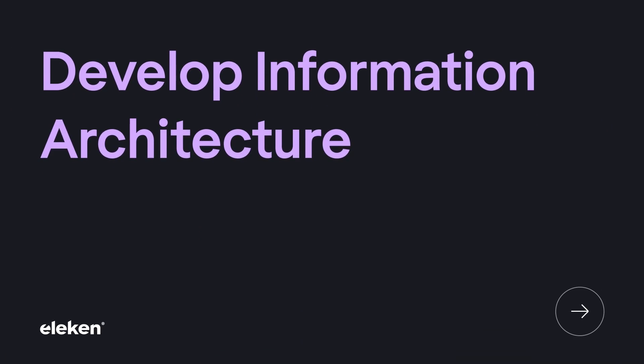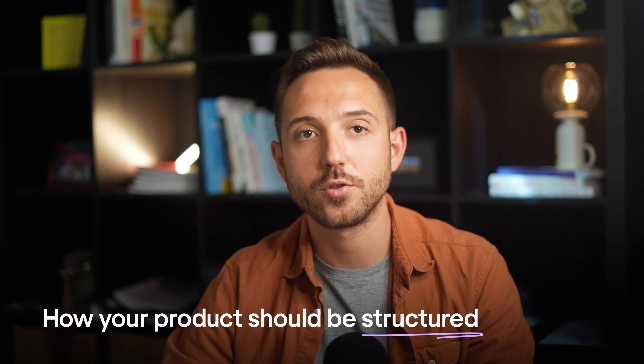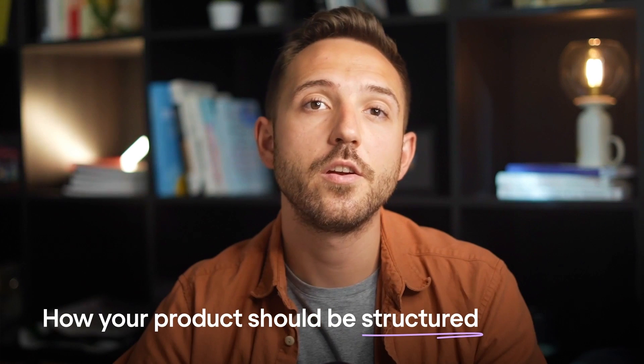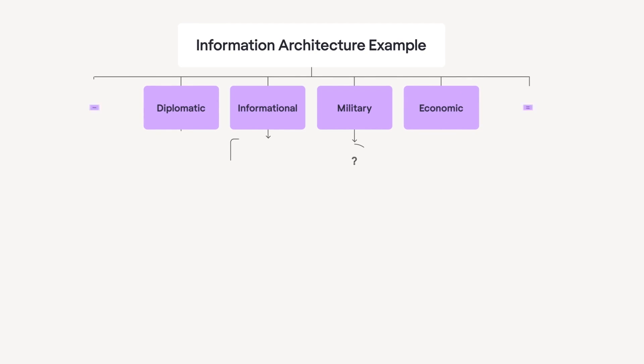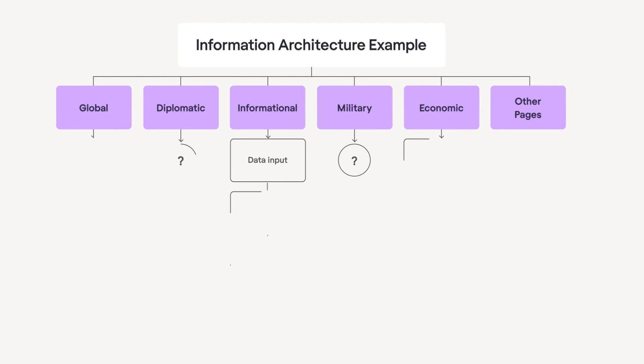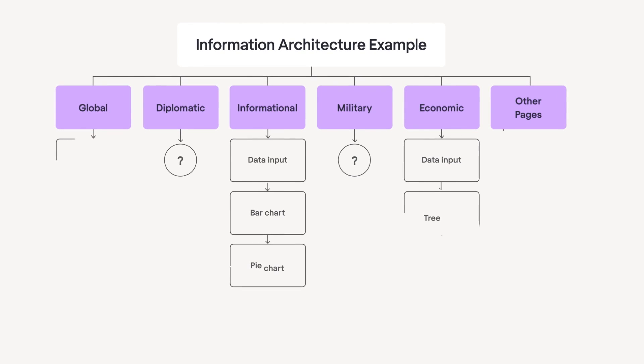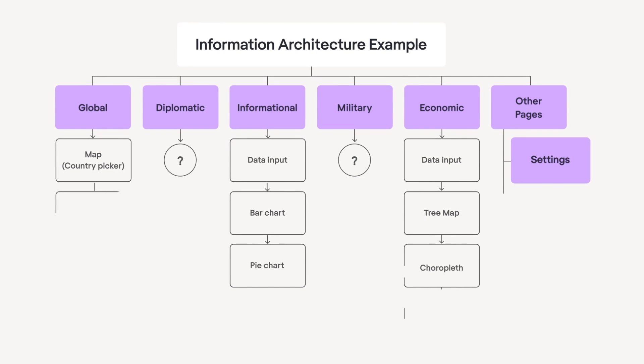And we move to stage number three: develop information architecture. After you've done your research and understand your users well, your next step is to plan how your product should be structured. Here you build information architecture that serves as a blueprint of an app, outlining what features exist and where they are located in the overall structure.